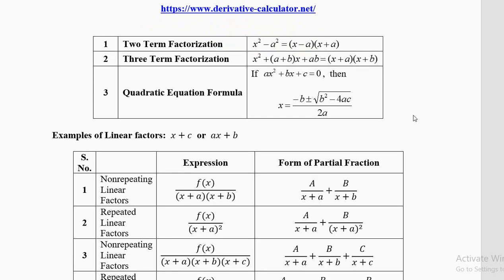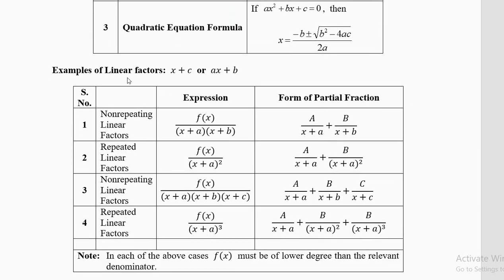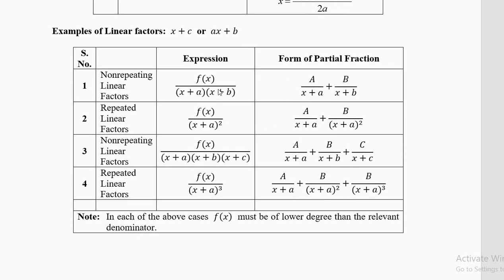Sometimes we cannot factorize directly and need the help of the quadratic equation formula. We have seen this in other chapters and videos. Now, what is a linear factor? A linear factor is a straight line of the form ax plus b or mx plus c — the power of x must be one.